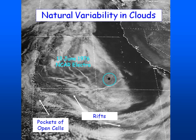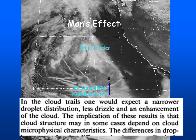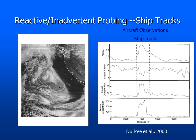Doug Lilly coined the idea that marine stratocumulus is a great natural laboratory because the synoptic variability is weak and you have these nice uniform cloud decks, except there is a certain level of natural variability within these clouds which does complicate the problem. We even speculated that in cloud trails one would expect a narrow drop size distribution, less drizzle, and enhancement of the cloud. Since then there have been different studies to look more carefully at these ship tracks.